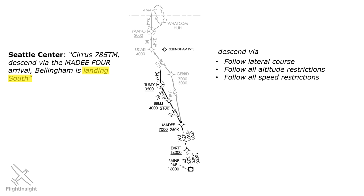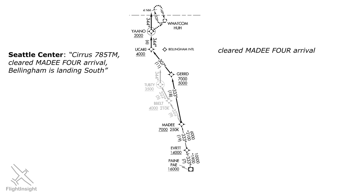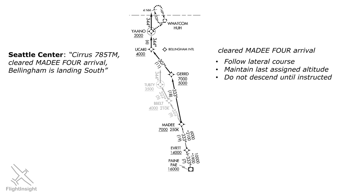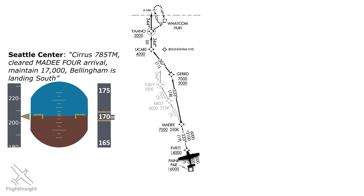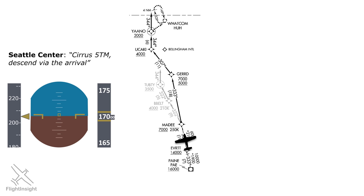Here's a different initial instruction: 'Cirrus 785 Tango Mike, cleared MADI-4 arrival, Bellingham is landing south.' What does 'cleared for the arrival' mean? It means we follow the lateral course as published, but we maintain our last assigned altitude and don't start descending until instructed. ATC is deviating us from the STAR as published by keeping us high. So we enter the procedure and remain at our last assigned altitude — 17,000 in this case — passing Payne and Everett until ATC says 'descend via the arrival,' at which point we can descend to meet the fix altitudes.